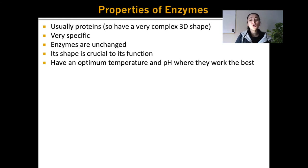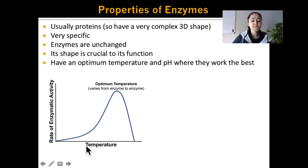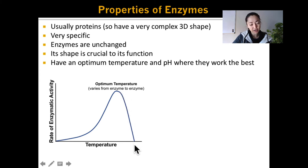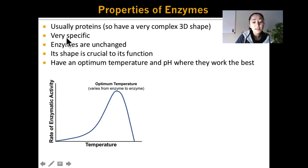Enzymes have an optimum temperature and pH where they will work the best. If you look at the relationship between temperature and the rate of enzymatic activity, you will notice that as you increase the temperature, the rate increases up to a maximum point, which we call the optimum temperature. However, above the optimum temperature, the rate decreases — and that's because at high temperatures, denaturation occurs. The optimum temperature, where an enzyme works the best, may also differ from enzyme to enzyme.